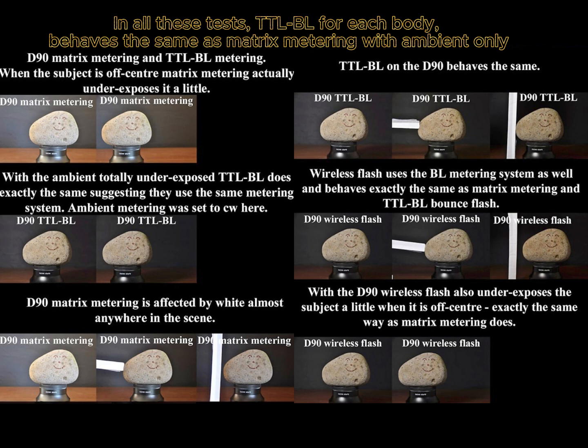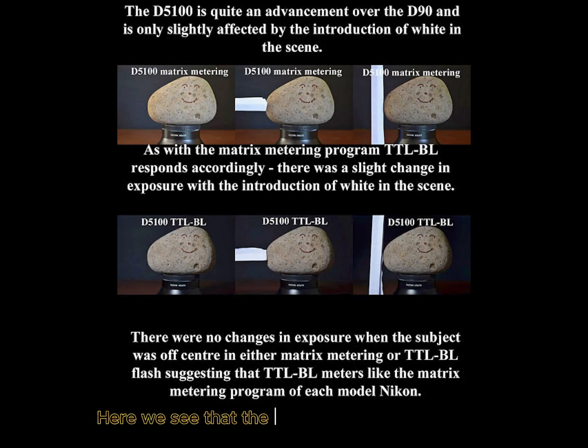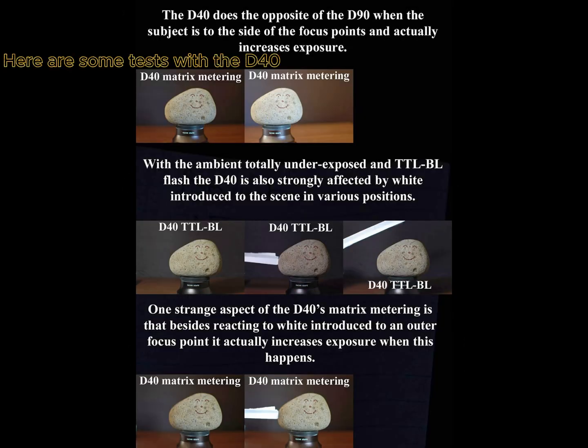What other features of TTL BL can we experiment with? How about comparing it to matrix metering in a subject that moves to the side? In all these tests, TTL BL for each body behaves the same as matrix metering with ambient only. Here we see that the D5100 behaves differently to the D90. Just keep in mind that TTL BL on each camera body behaves very much like matrix metering for that body. The programs are linked and change with each body.